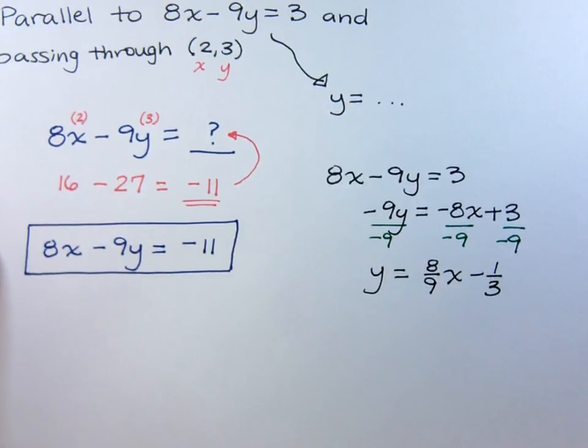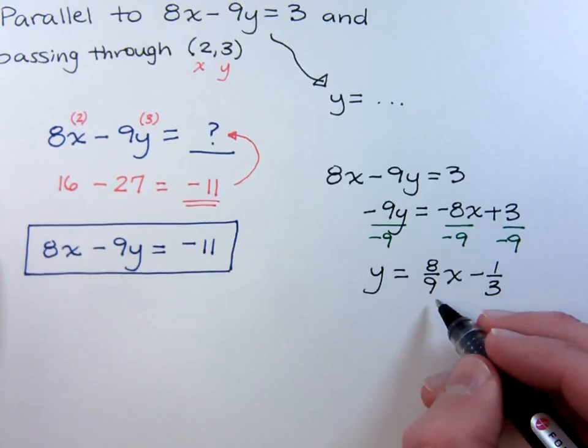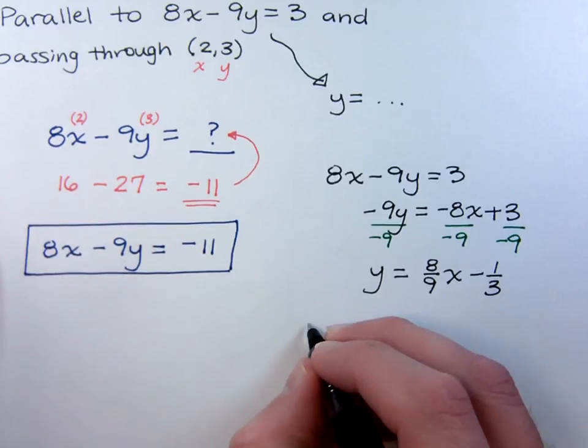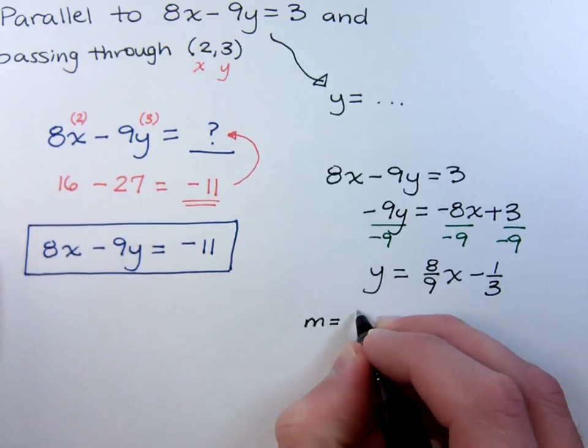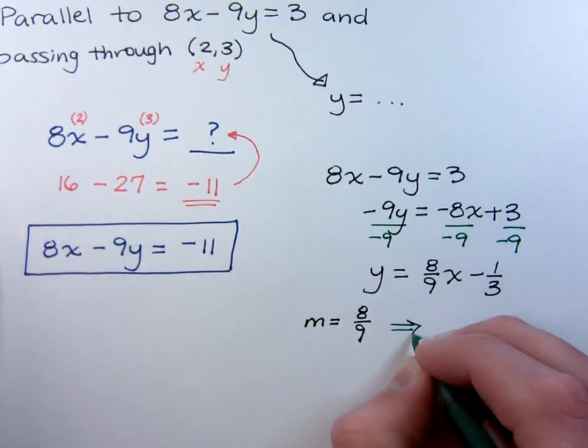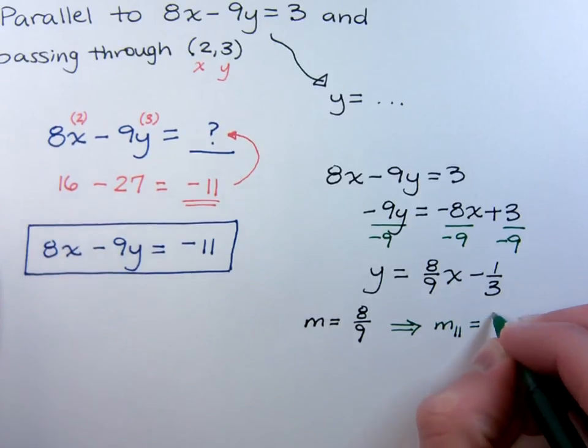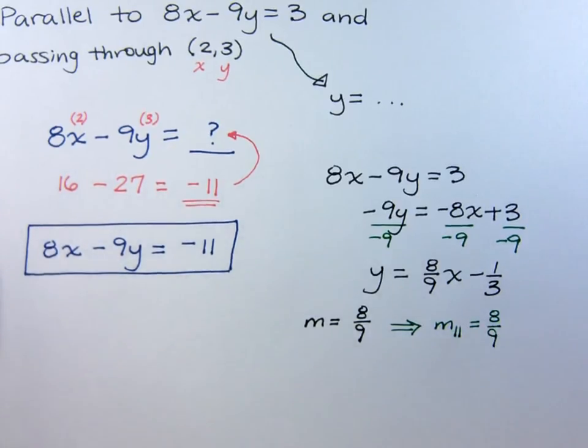If we're trying to be parallel, we don't really care what the y-intercept is going to be. We just care about the slope. The slope for this original line is 8 ninths. And that means to me, the slope of the line parallel to that also is 8 ninths.